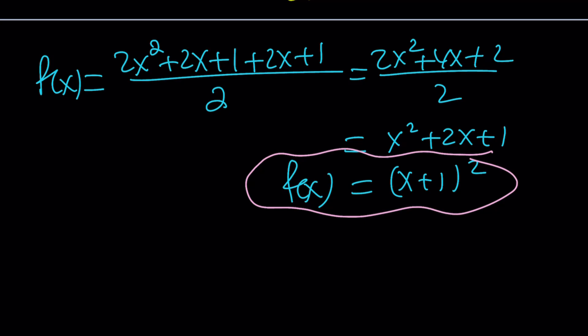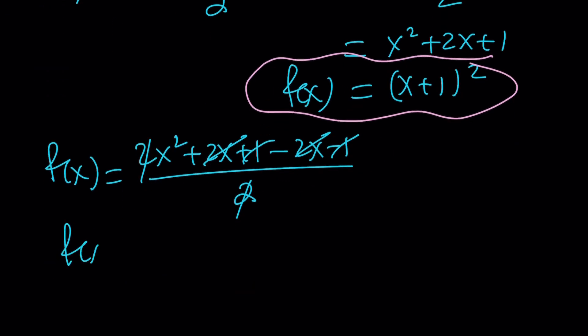And then the other solution is just going to be the same thing pretty much with a minus sign. 2x squared plus 2x plus 1 minus 2x minus 1 divided by 2. 2x cancels out, 1 cancels out, and 2 cancels out. Everything cancels out and we end up with f of x equals x squared.